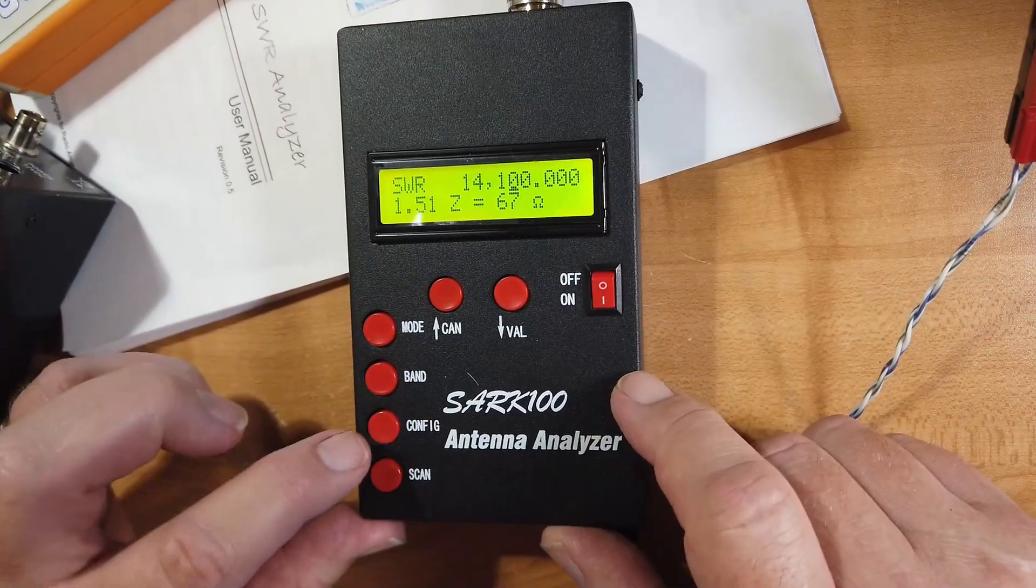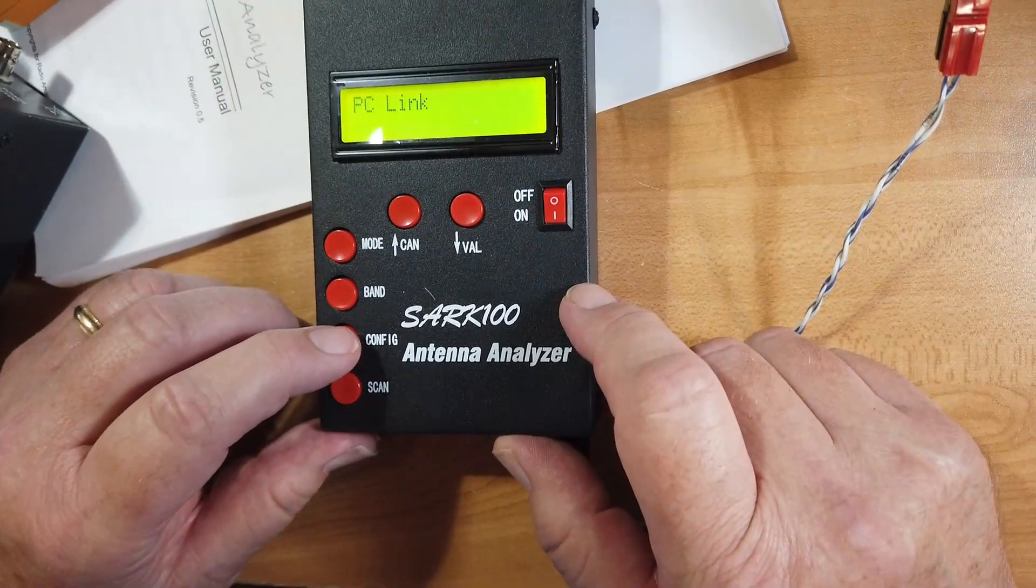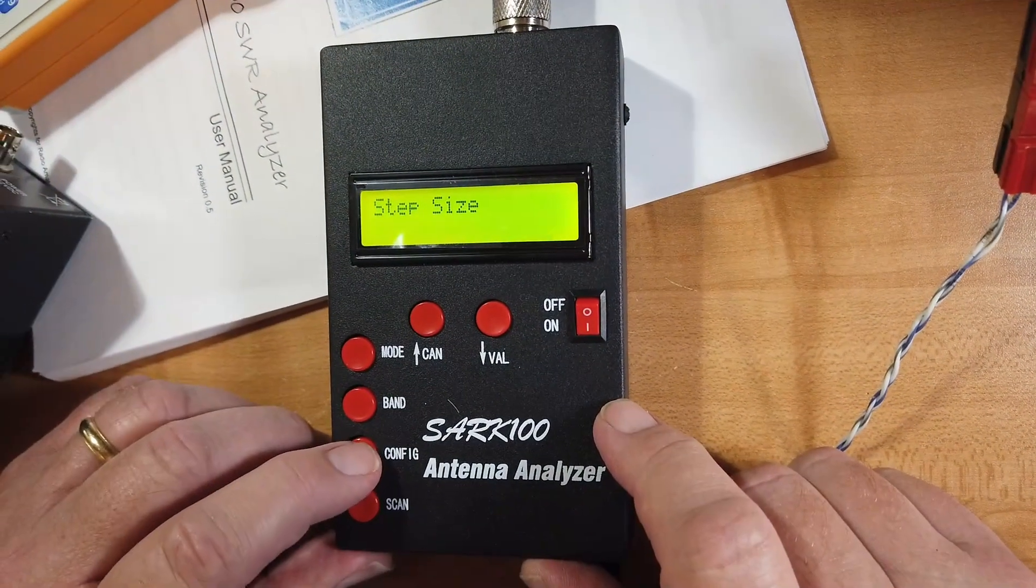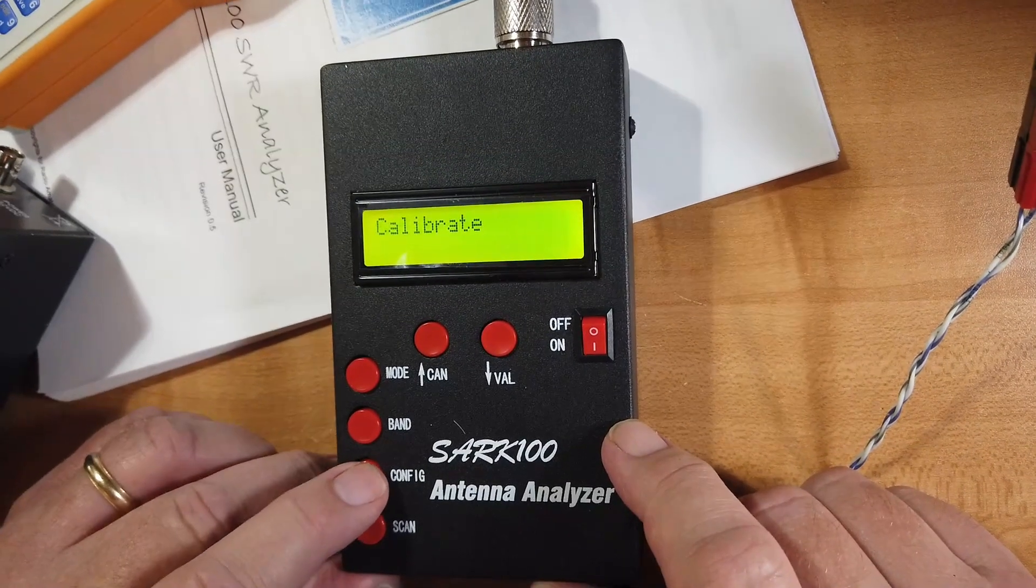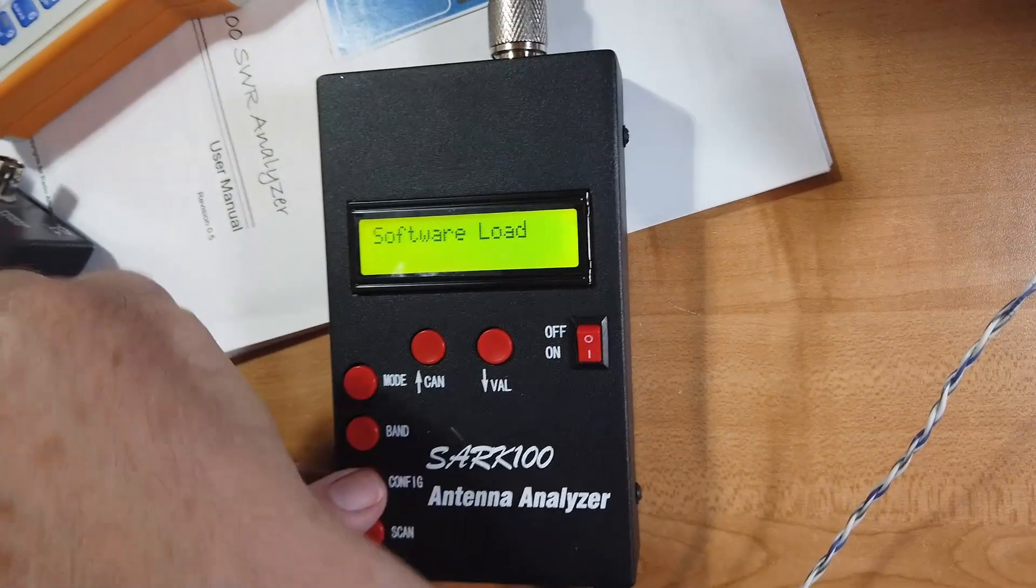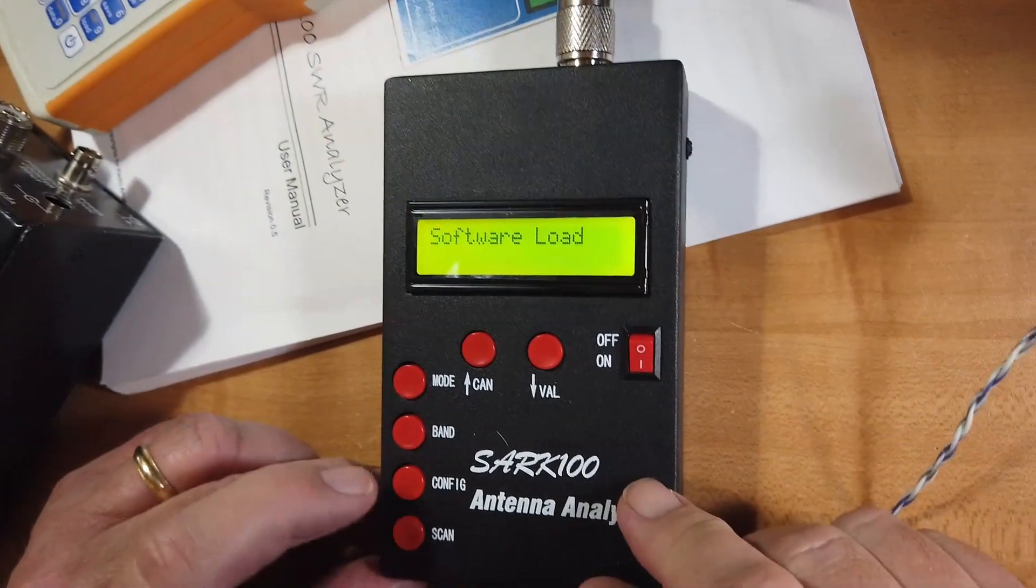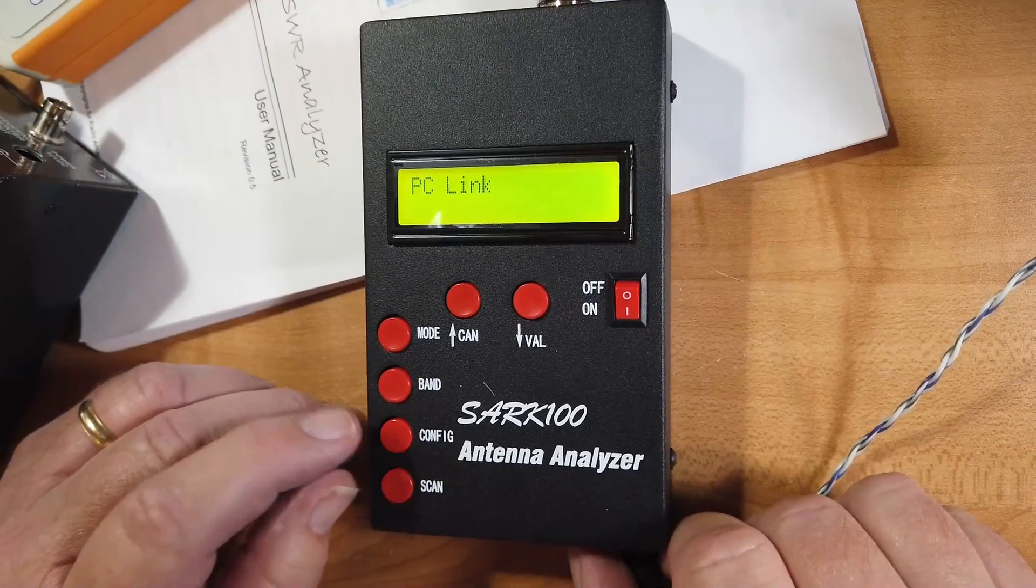You've got bands that you can go through. A whole configuration menu. The PC link, for example. Step size. Timeouts. Calibration. You can calibrate this one. You can calibrate these others, but they don't talk about it. Which software loaded has. Back to the PC link.